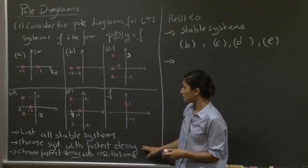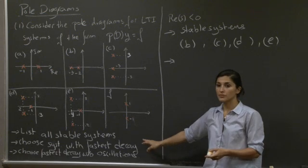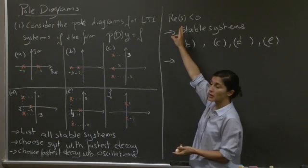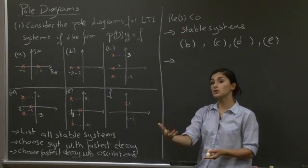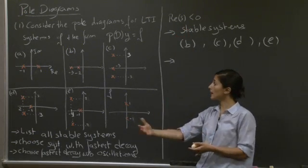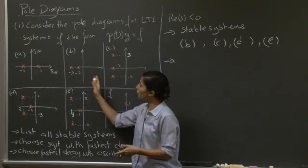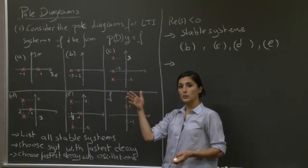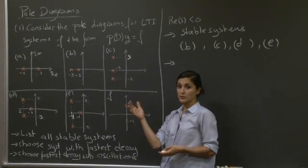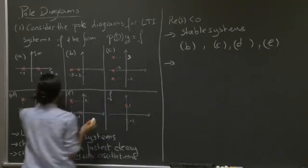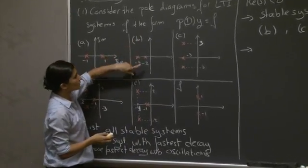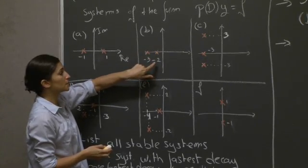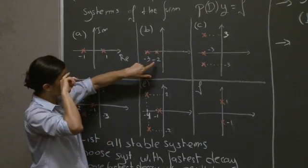For the second part, we choose the system with the fastest decay. As we just saw, the real part of the poles governs the speed at which the system decays. We need to look for the system whose rightmost pole is furthest to the left. The decay is governed by that rightmost pole — for example, an exponential e^(−2t) decay.